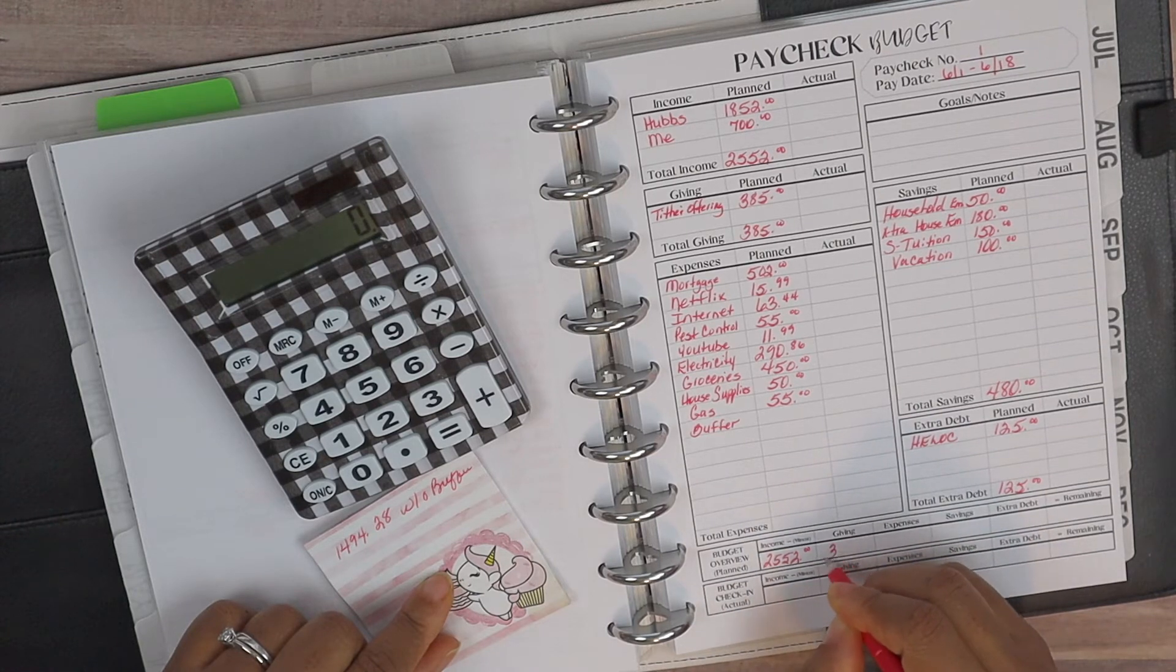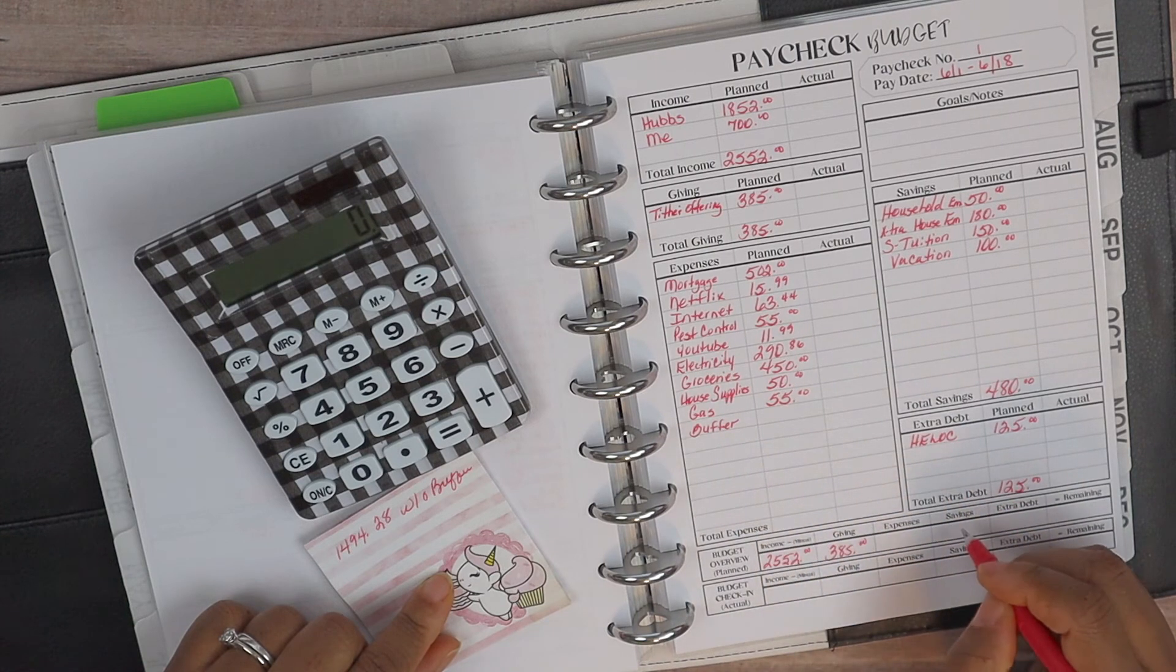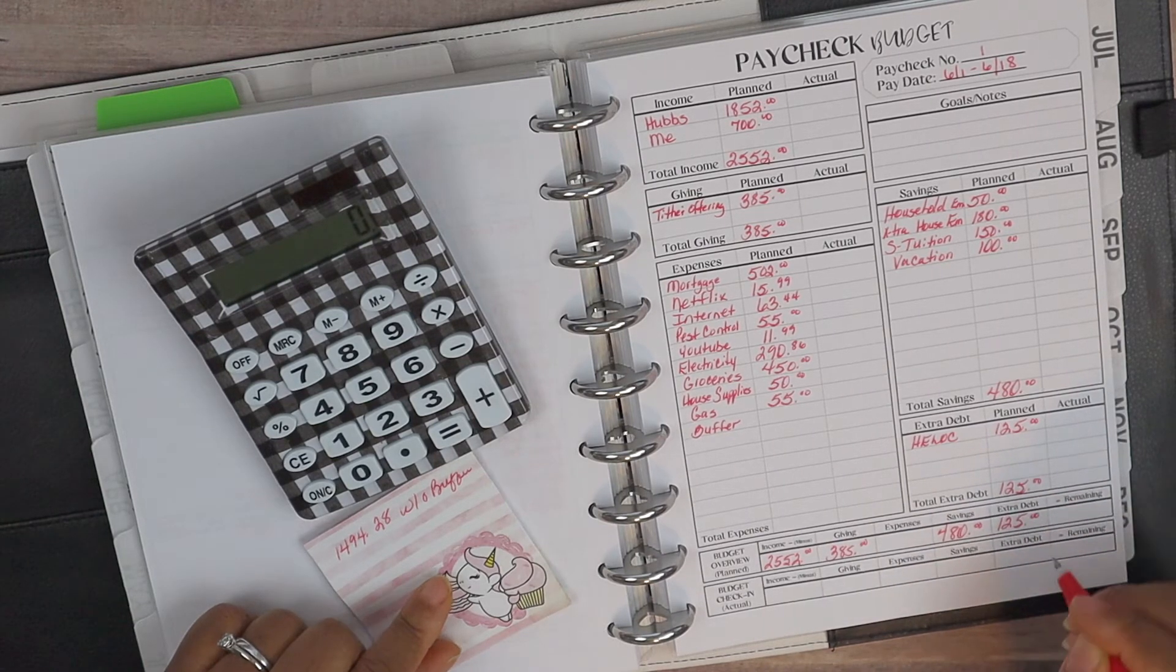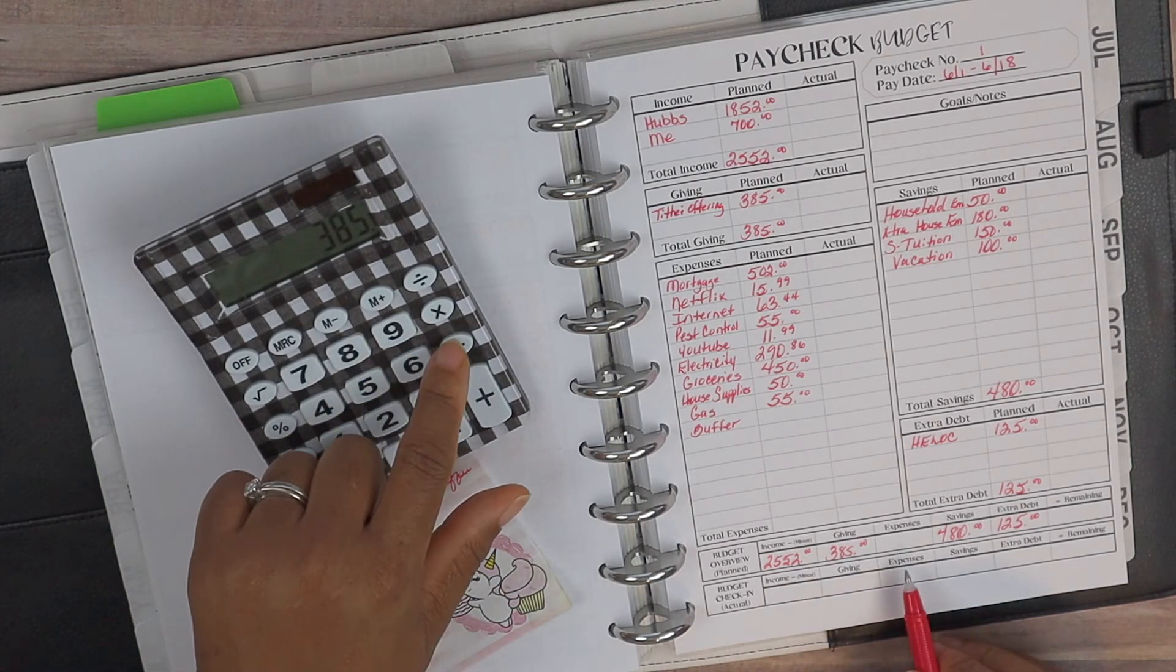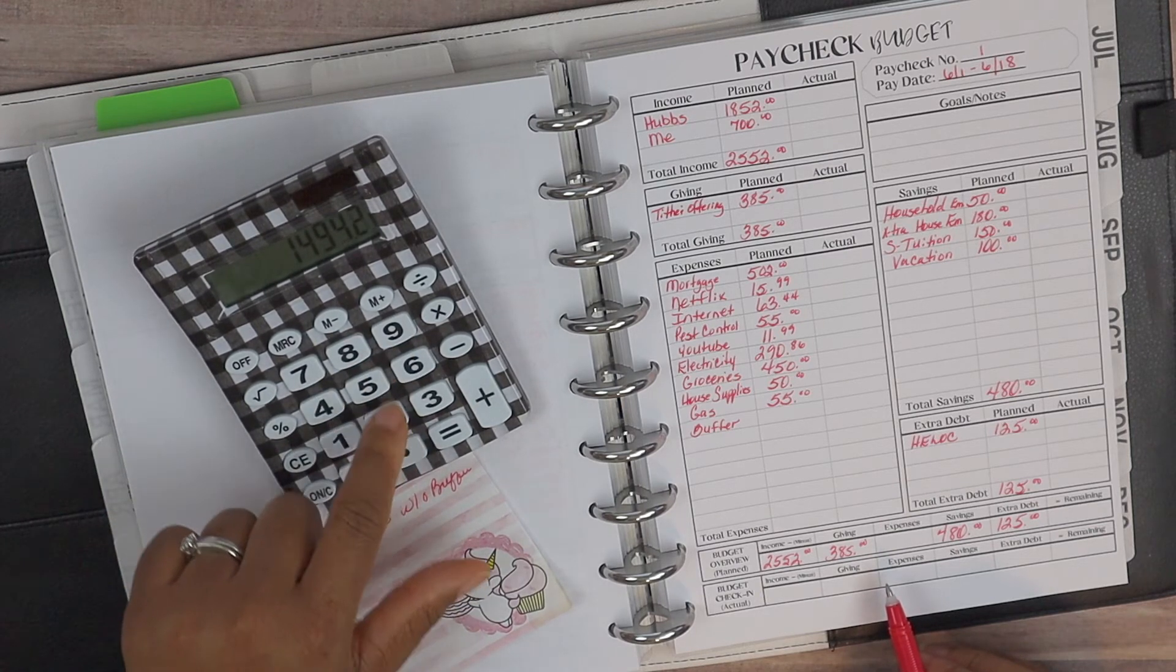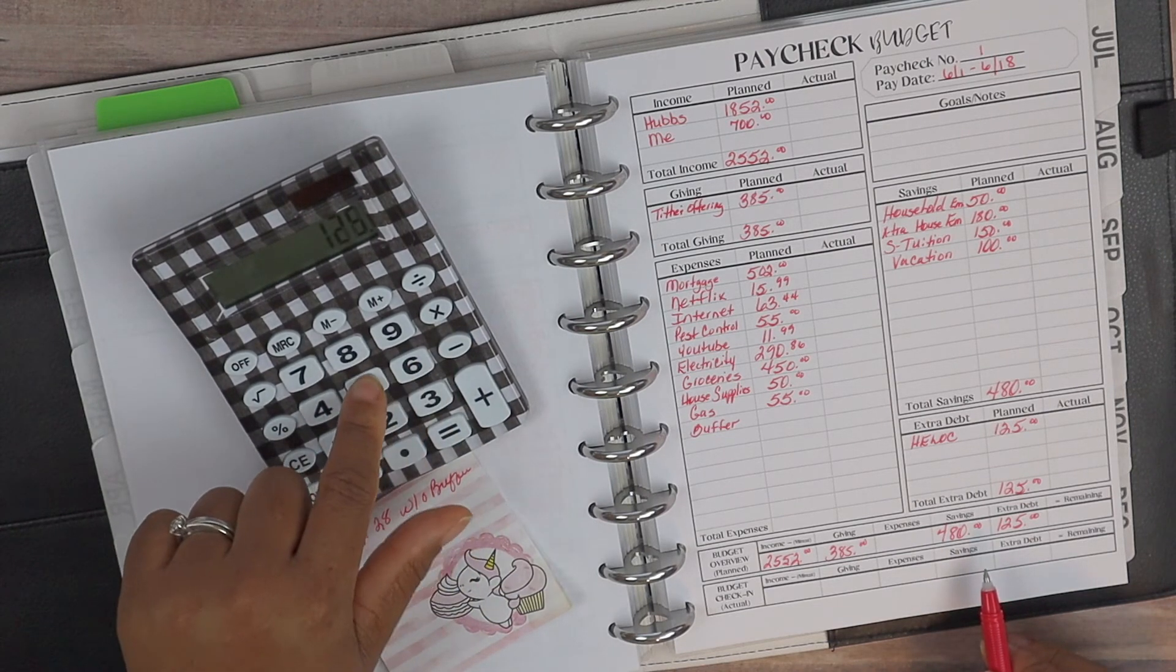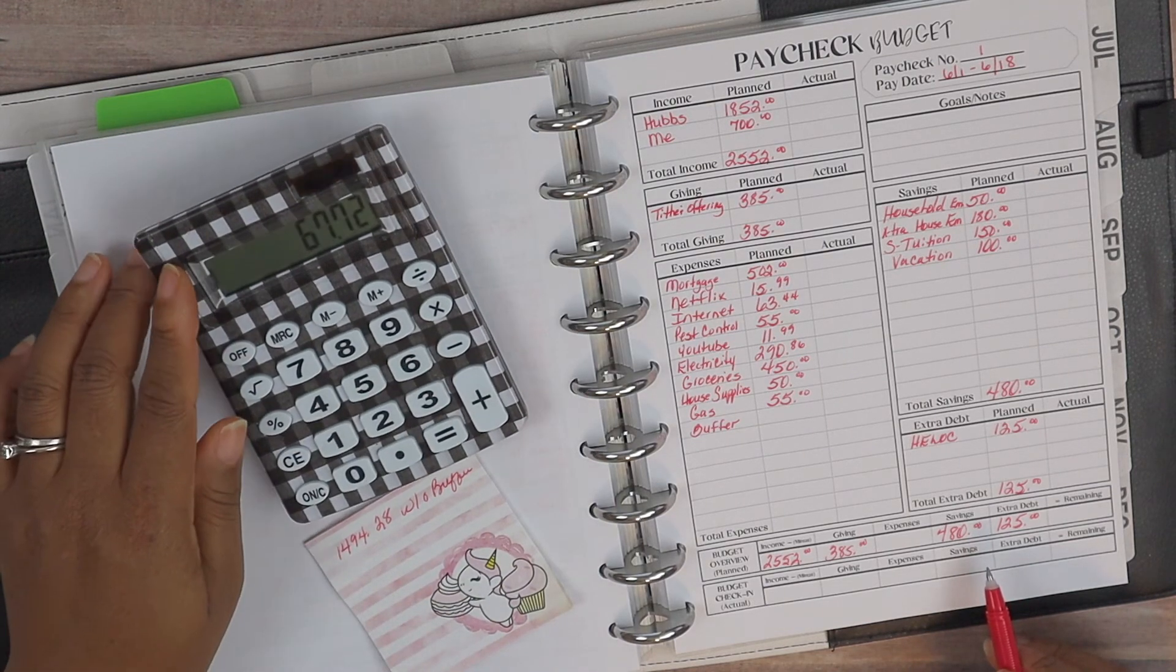The giving at $385. I'm going to hold off on expenses because we need to see how much is the buffer. Savings $480 and then the HELOC, we're planning $125. So $2,552 minus $385 minus, we'll say $1,494.28 for right now, minus $480 and then minus $125. So that leaves $67.72.